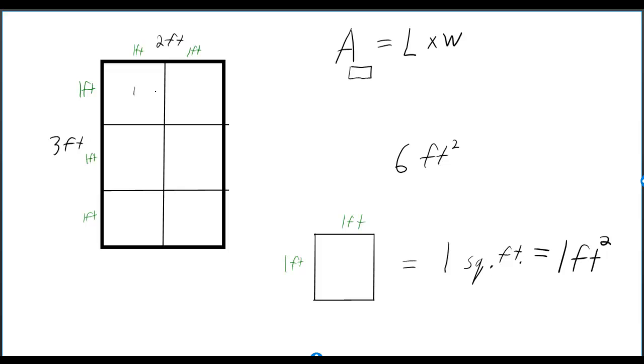But instead of just counting one, two, three, four, five, six, we can realize we've got three squares and then another three squares. So that's three plus three, or three times two. We've got two columns of three squares each.